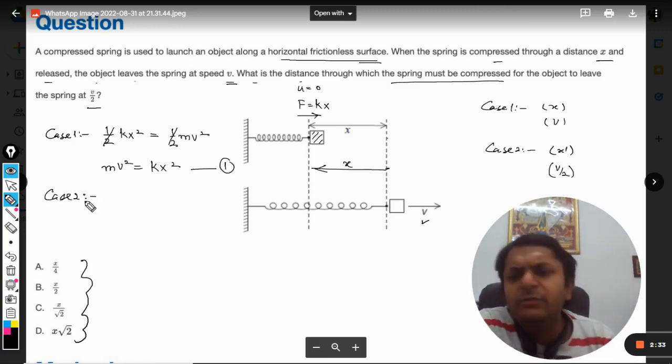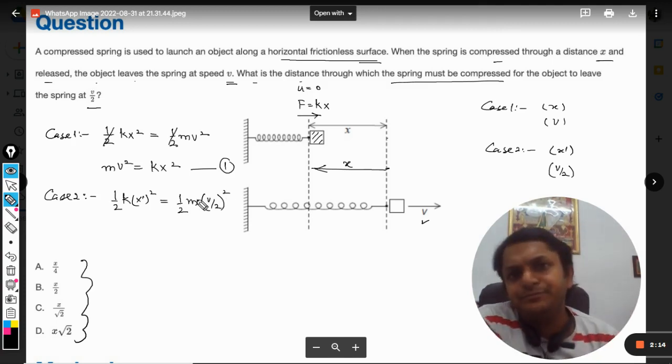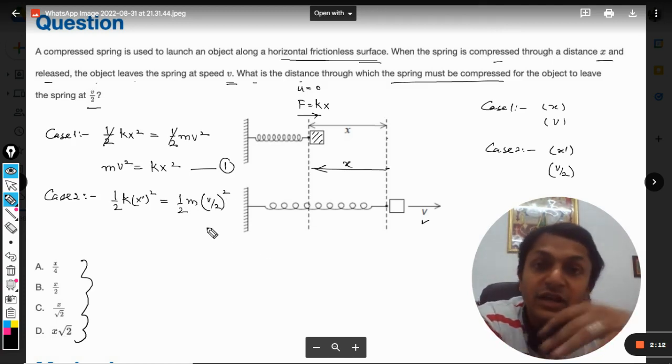Case number two is: if the compression is x dash, our potential energy will be ½k(x')² and I want it to be equal to ½m(v/2)²—the velocity will be v/2 because that is what the question wants us to find.